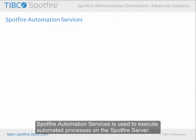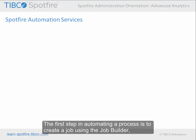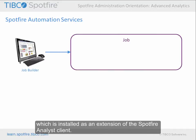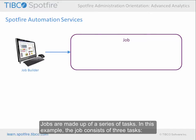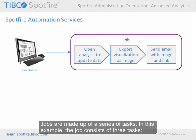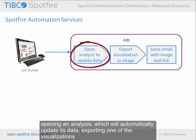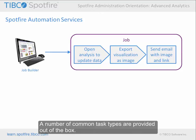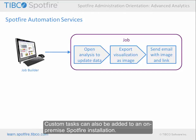Spotfire Automation Services is used to execute automated processes on the Spotfire server. The first step in automating a process is to create a job using the Job Builder, which is installed as an extension of the Spotfire Analyst client. Jobs are made up of a series of tasks. In this example, the job consists of three tasks: opening an analysis which will automatically update its data, exporting one of the visualizations as an image, and sending an email with the exported image and a link to the full analysis. A number of common task types are provided out of the box, and custom tasks can also be added to an on-premise Spotfire installation.